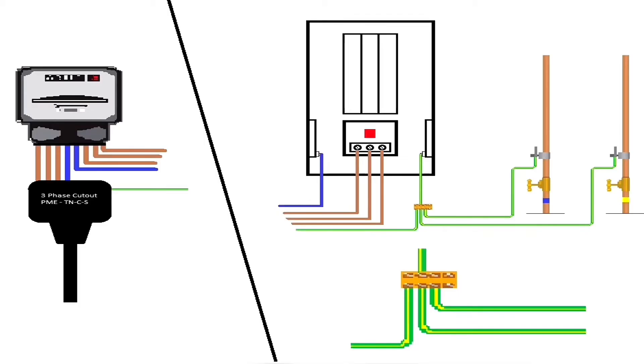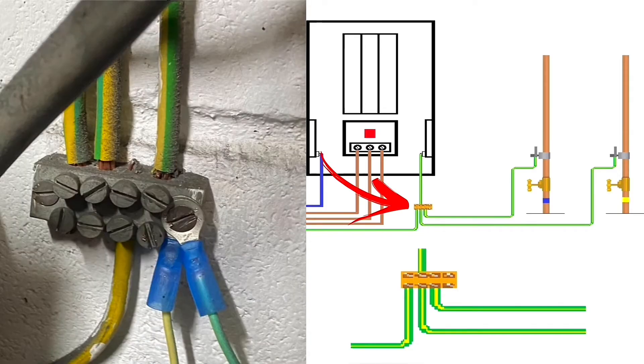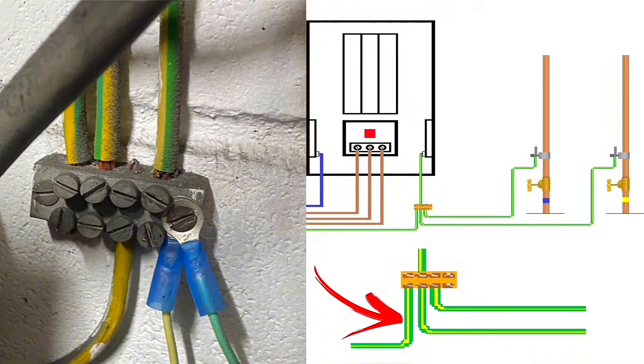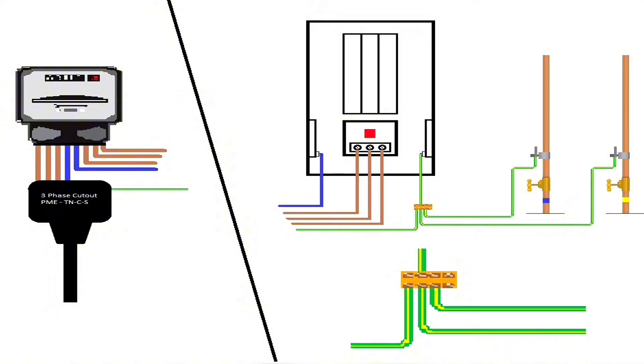We've zoomed in to the MET, the main earthing terminal. You can see the bottom conductor coming in from the left-hand side brings the earth in from the supply source, and a single earthing conductor then goes into the distribution board. Our bonding conductors are on the right-hand side.